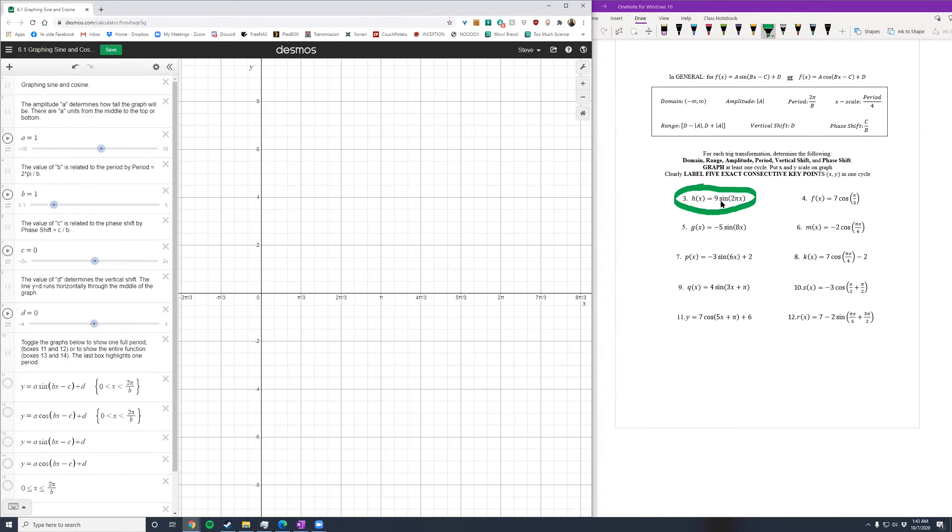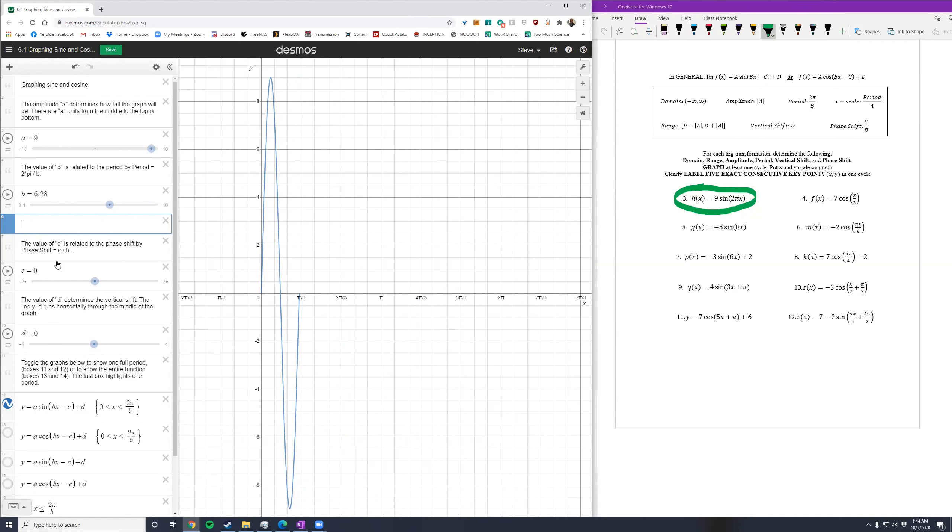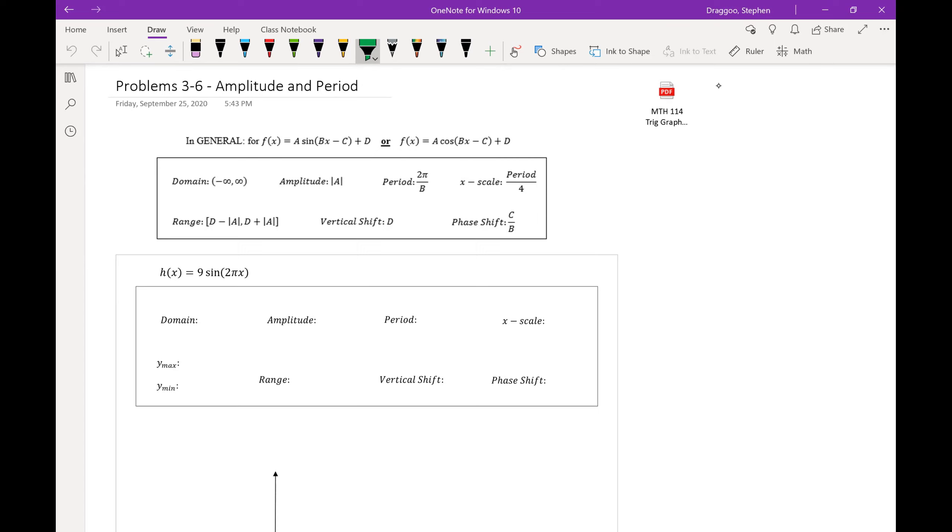In problem 3, we're going to be looking to graph 9 sine of 2πx. So to see what that would look like, I'll turn on sine over here. So I have my sine graph on in Desmos. I want to change my a value to 9. So increase this guy all the way up to 9. And then b is going to be 2π.